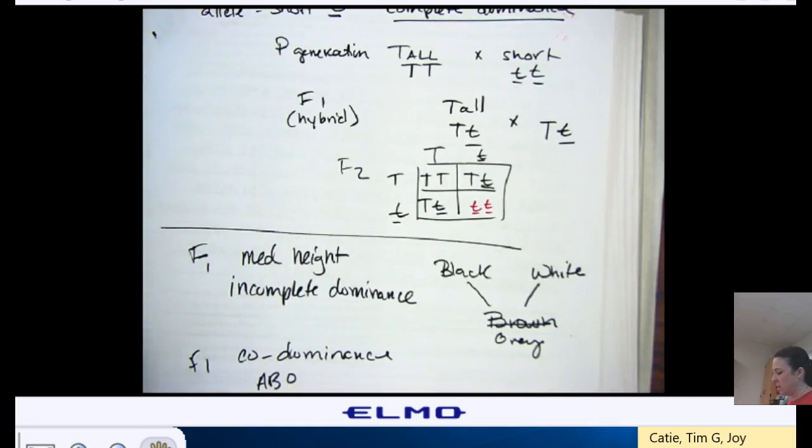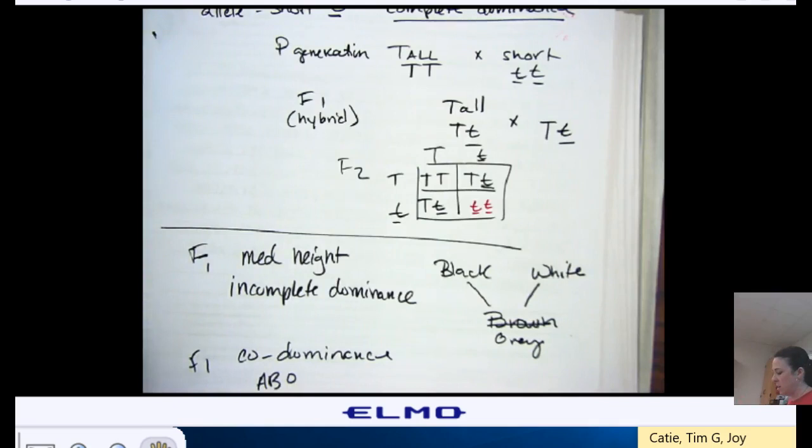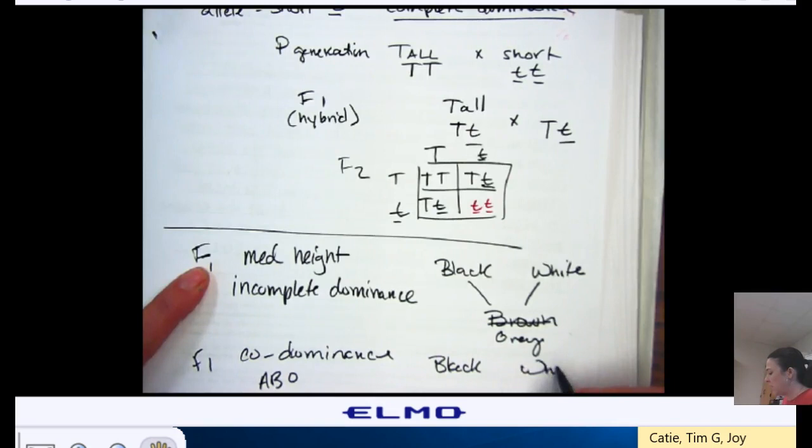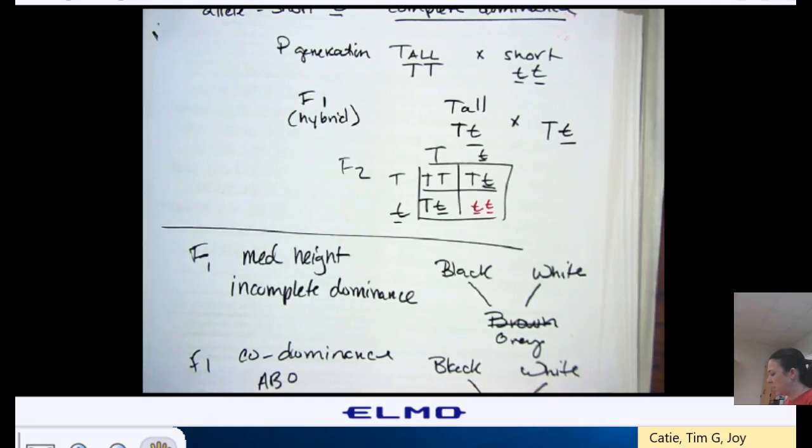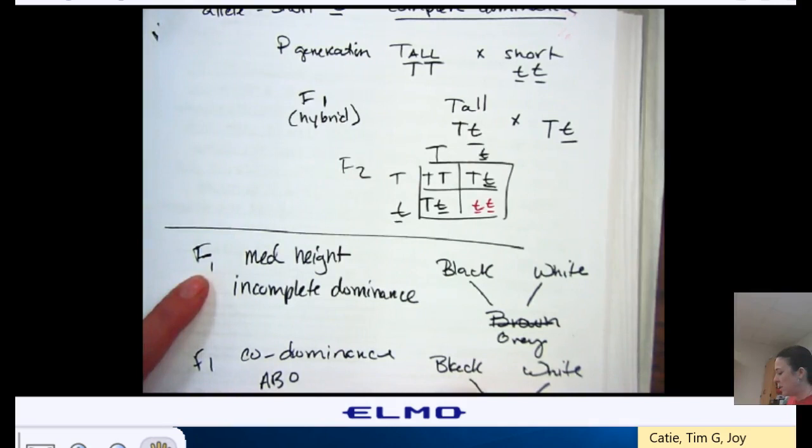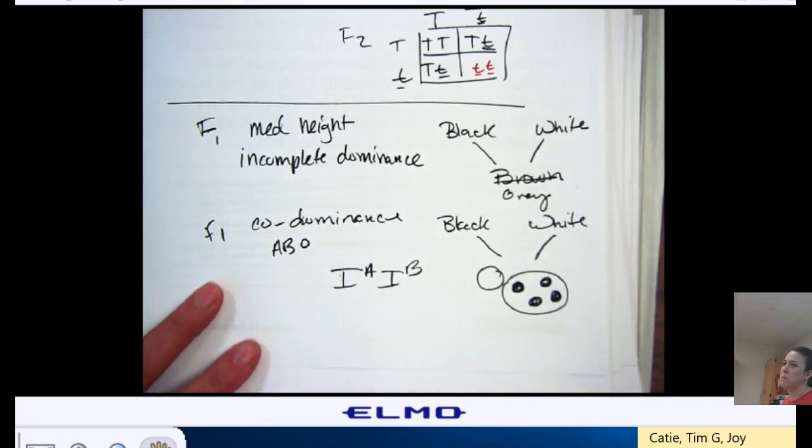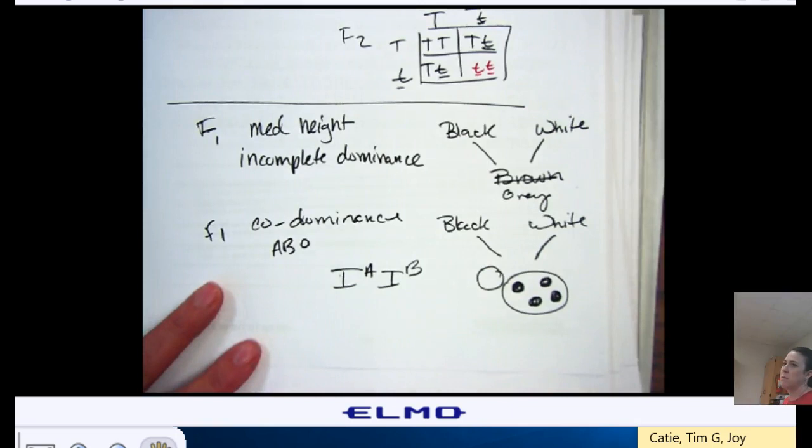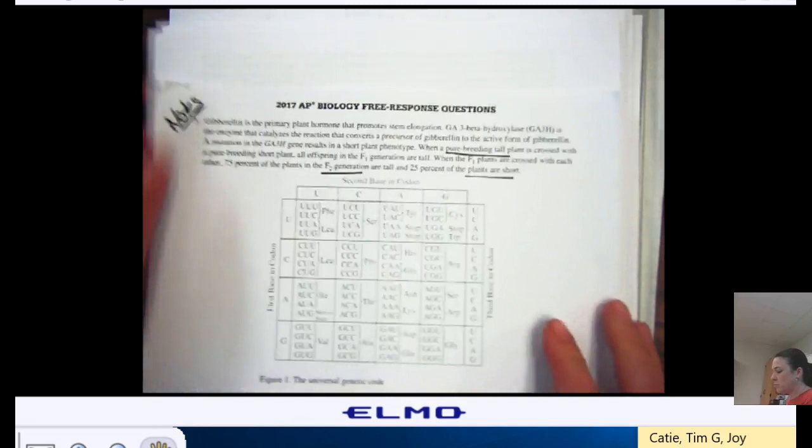But, if it was codominance, and I did a black and white, and I did my cross, I would get a little cow, and he would be black and white. And he might have black and white spots. So, I see both phenotypes. They're not blended, like they would be with incomplete dominance, but they're both shown. And that's like with ABO blood typing, if you have this genotype, you have A blood receptors and B blood receptors. You have both. You don't just have A blood, you have AB blood.